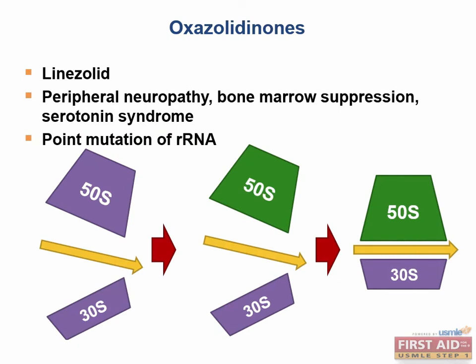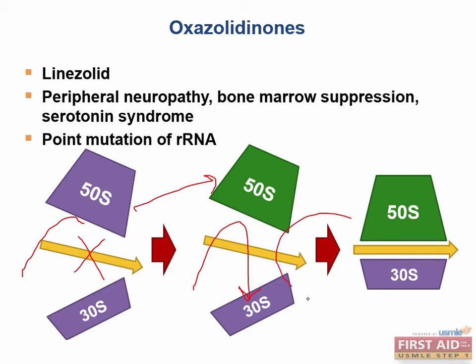Bacteria become resistant to linezolid by creating a point mutation in the 50S ribosomal RNA. This point mutation prevents linezolid from binding, allowing translation to continue. In the animation, we see linezolid coming in to block translocation, but with a point mutation it cannot bind, bounces off, and translation is allowed to continue.